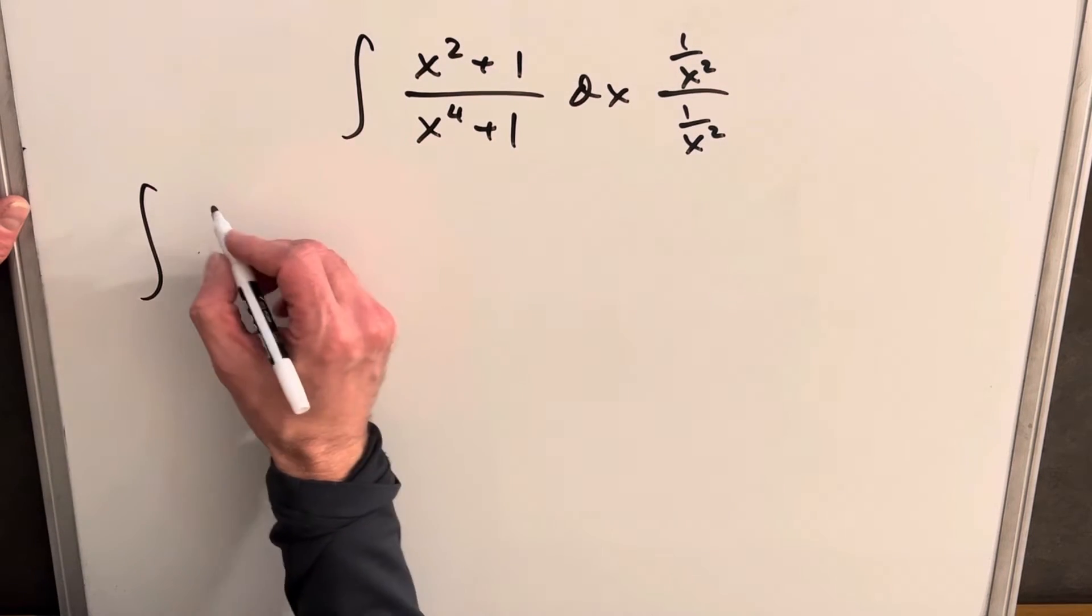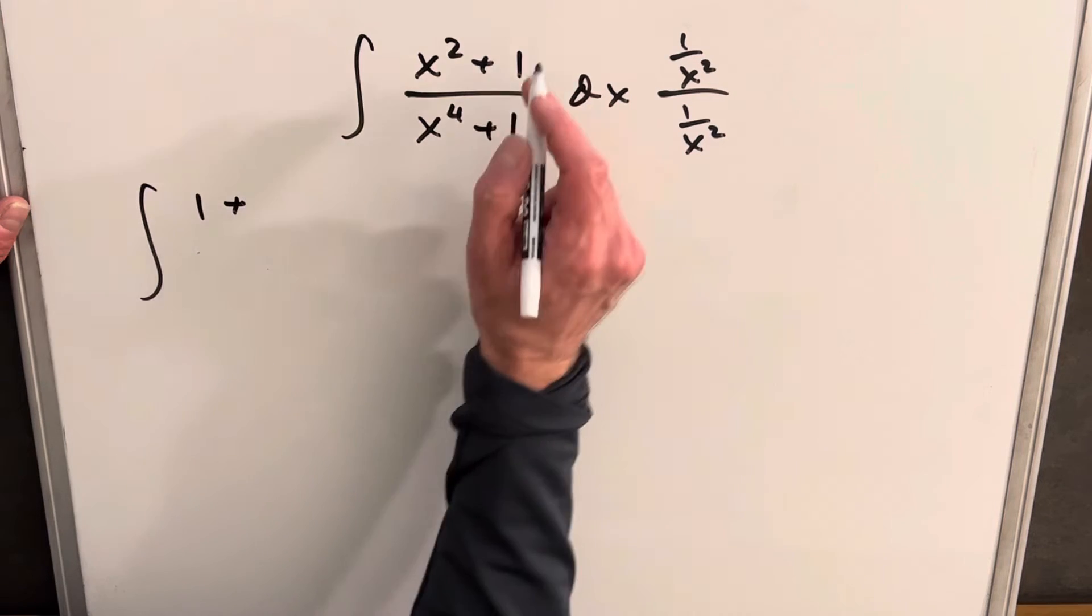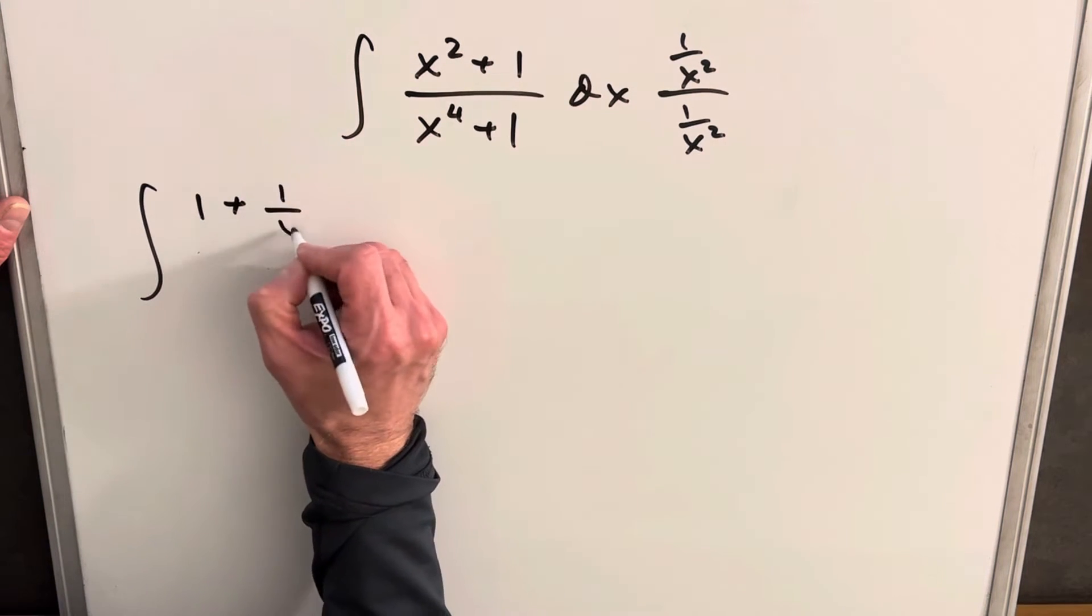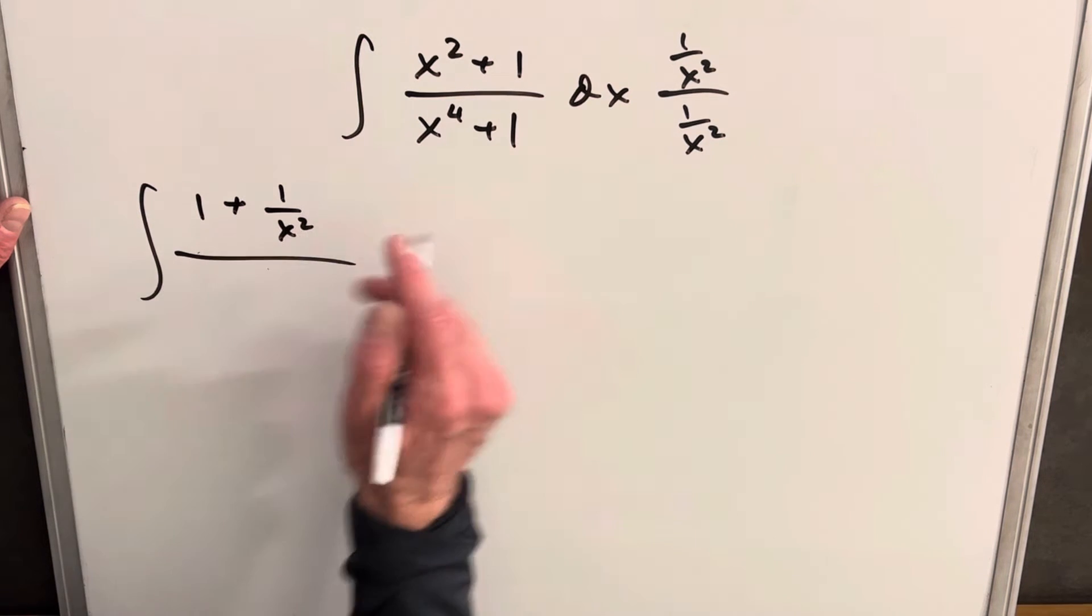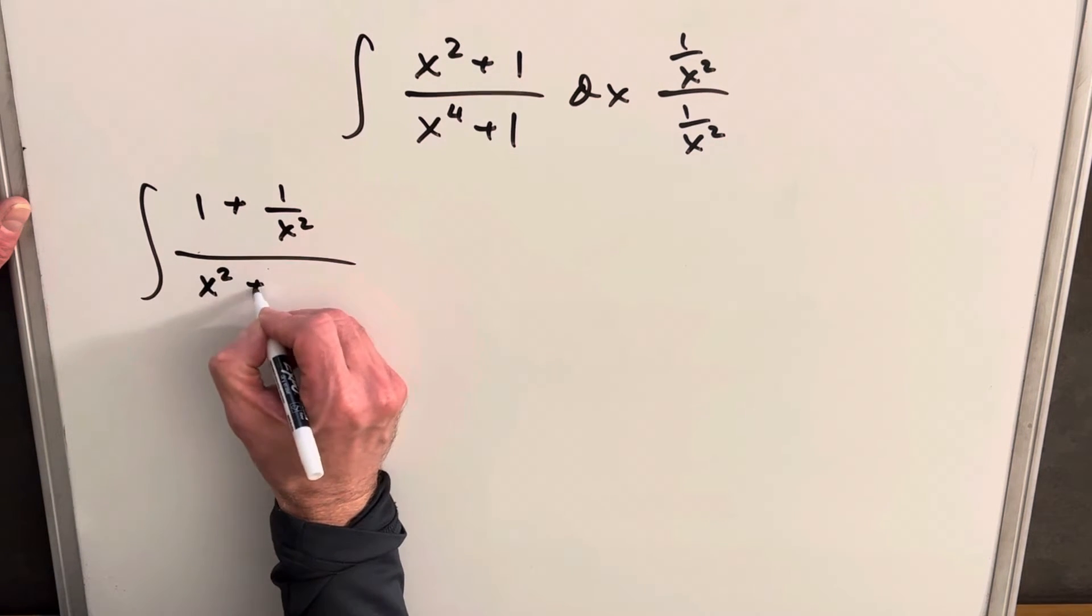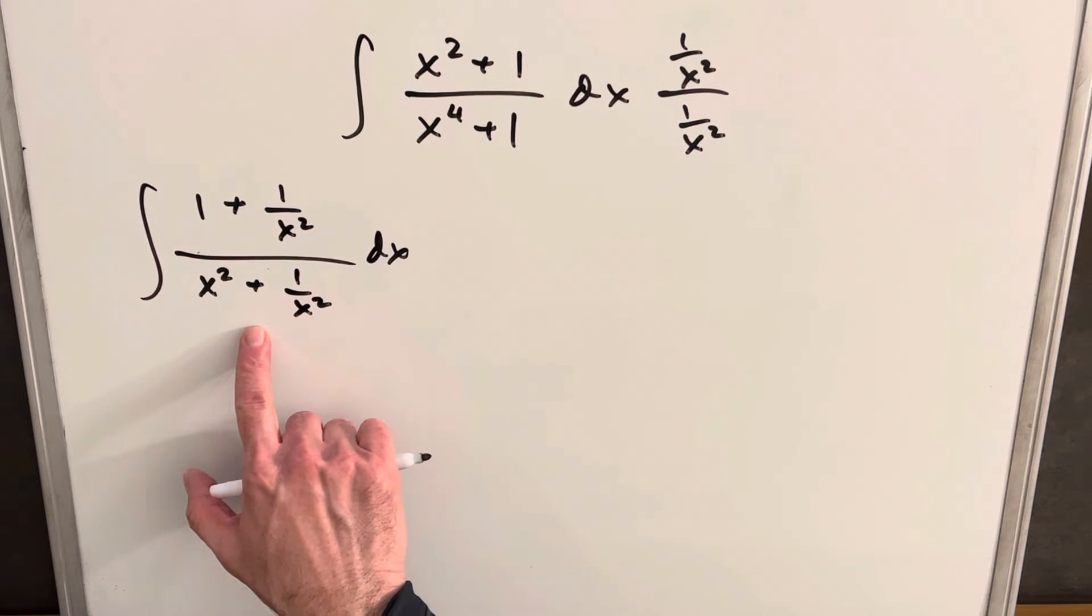So just multiplying this out, we're going to transform our integral. 1 over x squared times x squared is 1, plus 1 times this is going to be 1 over x squared. And then we're going to have here, multiplying this in, x squared plus 1 over x squared.